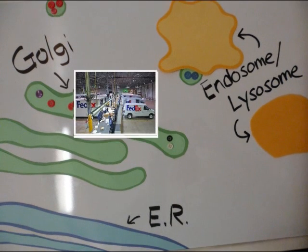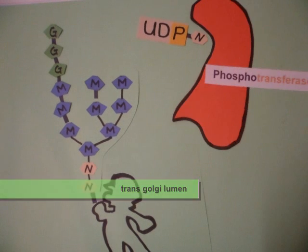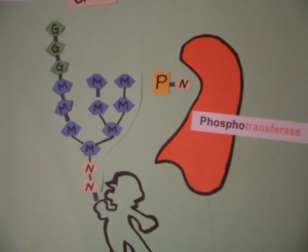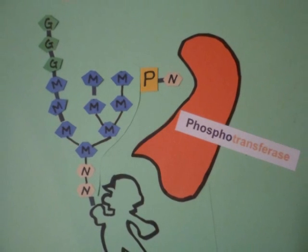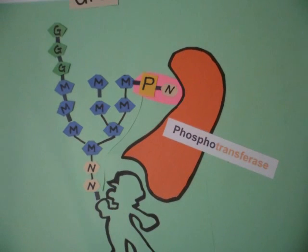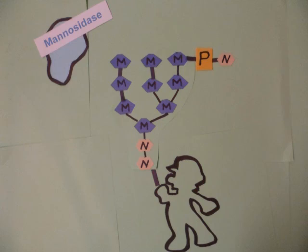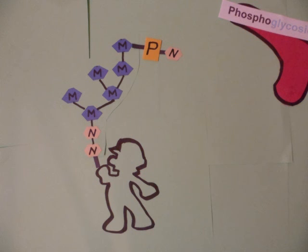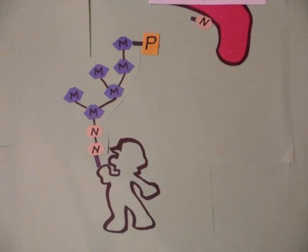The modification and sorting occur in the trans-Golgi. First, GlcNAc phosphotransferase takes UDP-GlcNAc and separates it into UMP and a GlcNAc phosphate. The GlcNAc phosphate binds to the transferase and is carried to the binding signal patch of the enzyme, then transferred to the mannose residue. A mannosidase further modifies the mannose group so there are six mannose residues. Finally, a phosphoglycosidase removes the GlcNAc residue, resulting in the phosphomonoester which serves as a recognition marker.